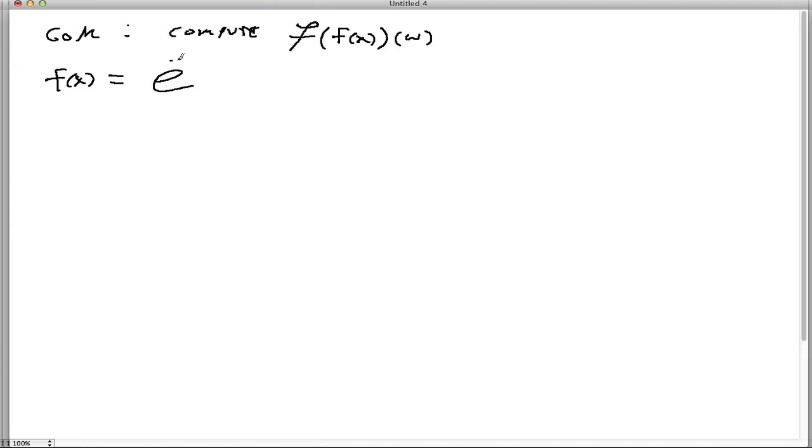And f of x is going to be this particular function, e to the negative absolute value of x. So let's look at a plot of what that function looks like. It's a negative exponential. It's a decaying exponential. And it decays on both sides of the x equals 0 line, like that. And so certainly we can take a Fourier transform of this. So let's do so.